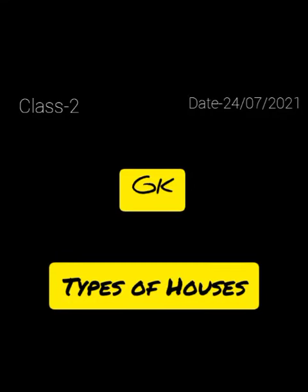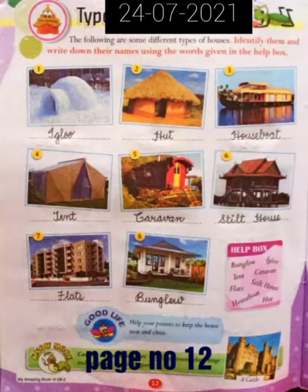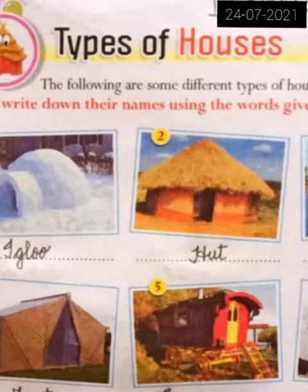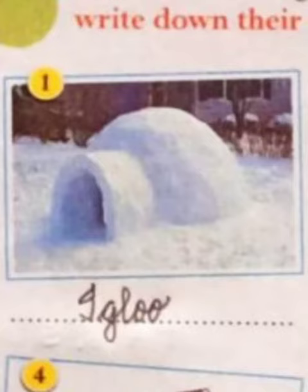Let us learn our next topic. Please open page number 12 and mention the date. Types of houses. People make different types of houses using many kinds of things. People make houses with material which is easily available in the area they live in. For example,